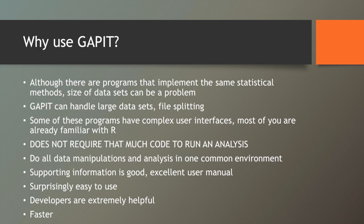The supporting information for GAPIT is excellent — they have a wonderful user manual. One of the unique features is that GAPIT was designed so that you can take their user manual and essentially cut and paste the code out of the manual and put it into R and run it. It is easy to use, and the developers, especially Alex Lipka, are extremely helpful. From a performance standpoint, I find GAPIT quite fast. Some analyses I ran in TASSEL used to take a day or day and a half; when I switched to GAPIT I was able to do them in three to four hours.